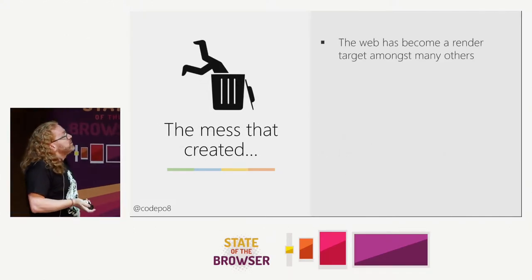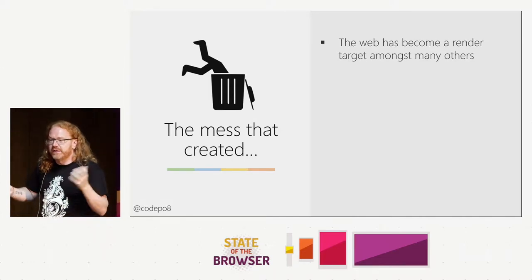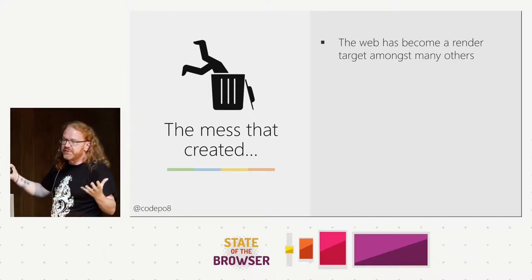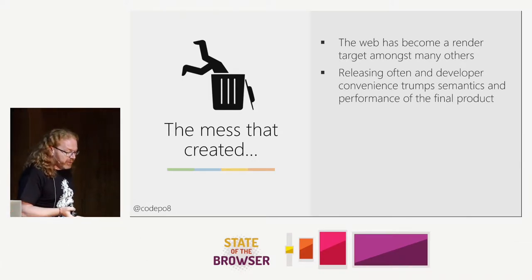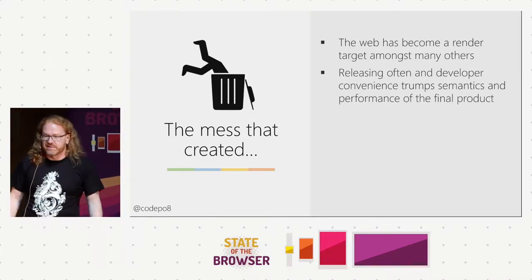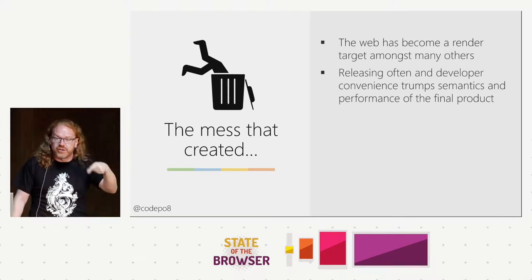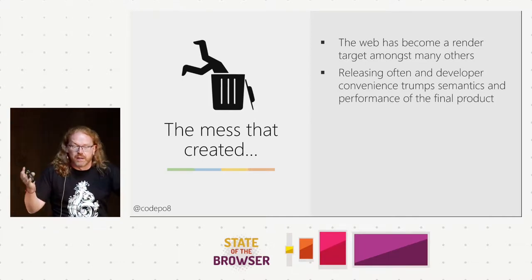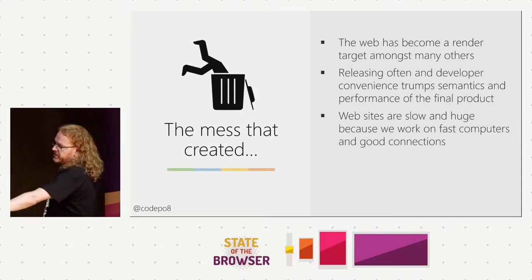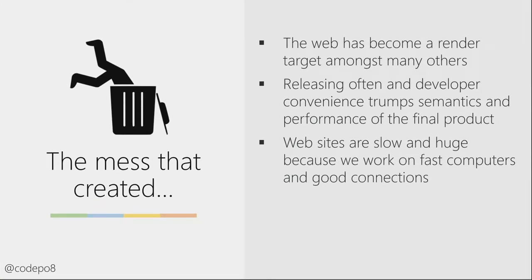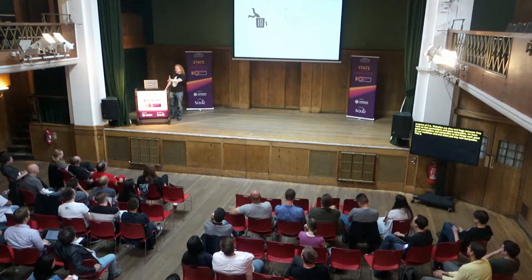That created a messy web. The web has become a render target amongst many others — it's not people writing HTML and CSS, optimizing everything and uploading to FTP. No, we just use 12 different libraries, press a button, hope everything works, and when we get 6,000 nested divs, who cares? Developer convenience trumps semantics and performance of the final product. Websites are slow and huge because they work on fast computers with good connections — so end users should just buy new computers, right? This is a quad-core i9 machine with 32 gigs of RAM. The web looks good for now; next week it'll probably be slow.